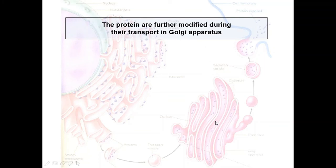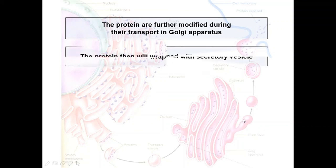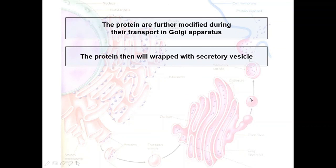So, what happens next? The proteins are then wrapped in secretory vesicles. The secretory vesicles then bud off from the Golgi apparatus.